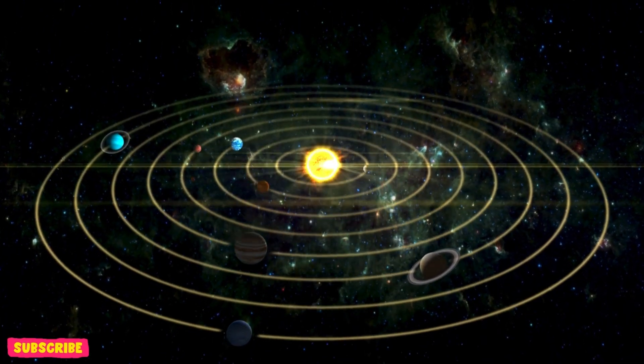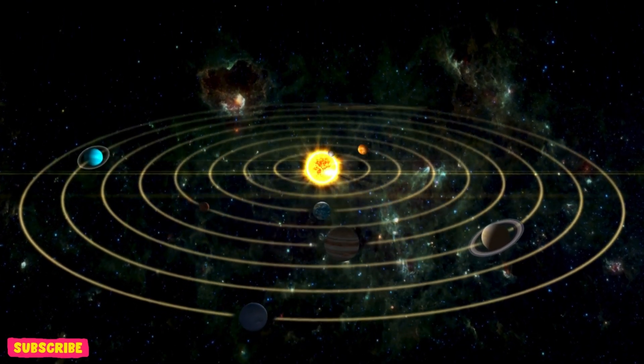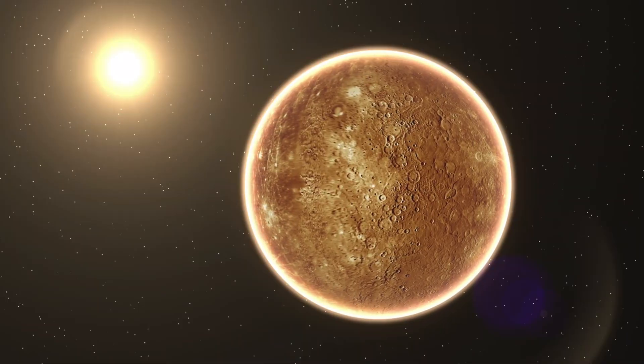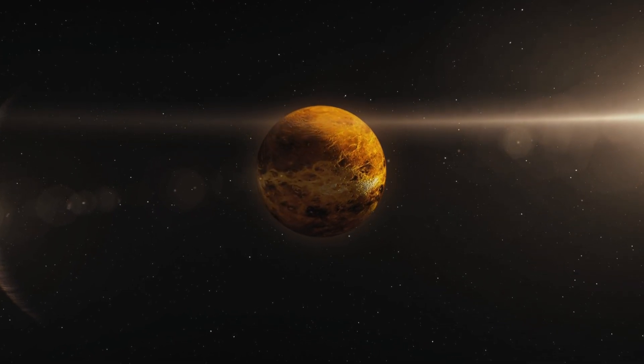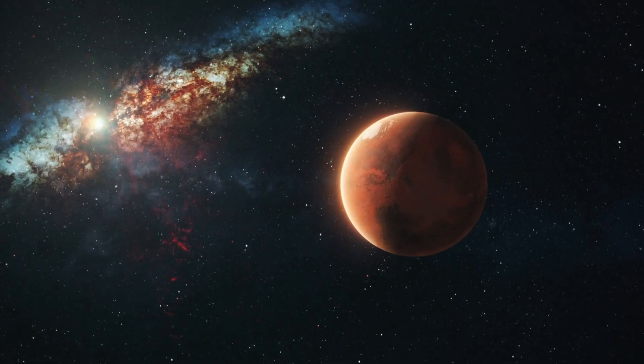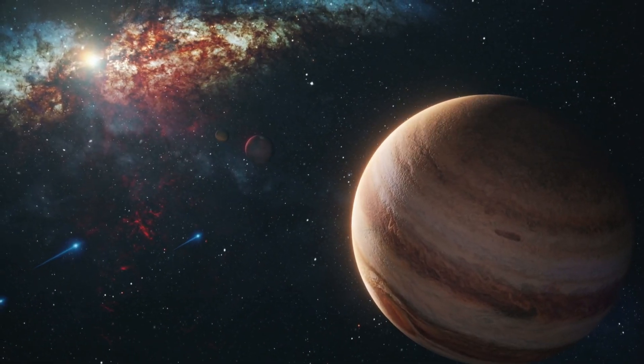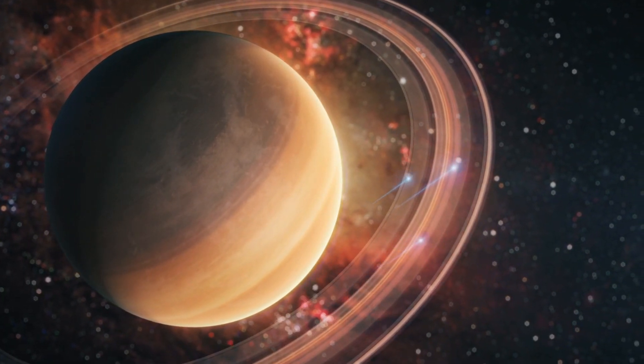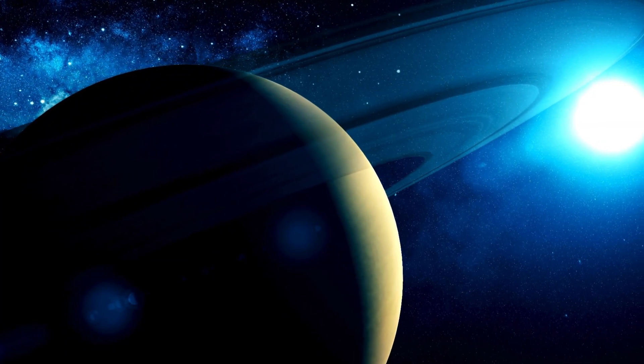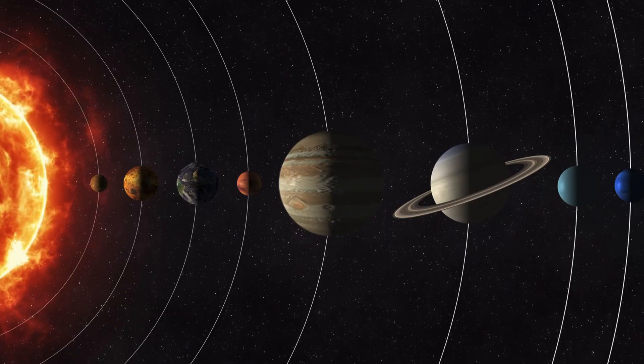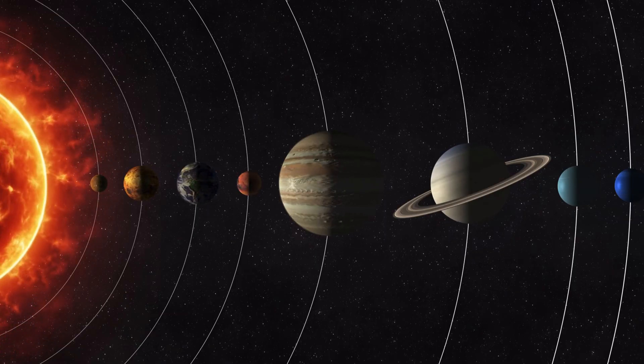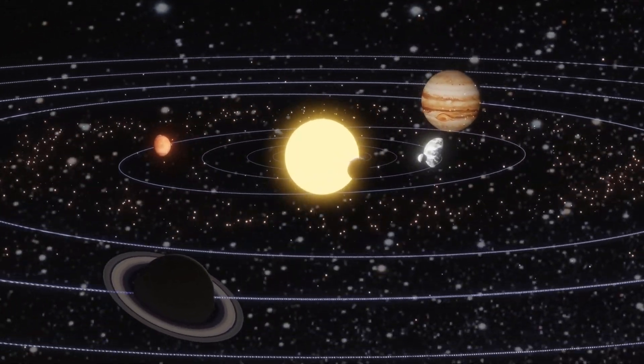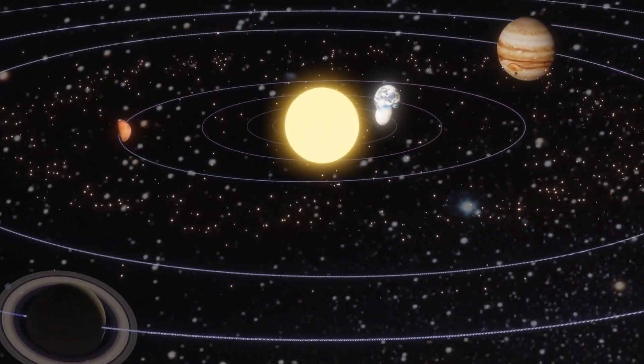The sun is bright, it shines so high. A big hot ball up in the sky. Planets spin and go around in their orbits, safe and sound. Eight cool planets in a row, around the sun they always go. Spinning, spinning around the sun. The solar system's so much fun.